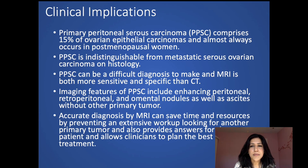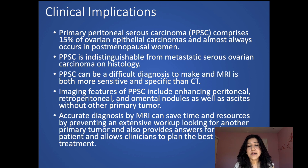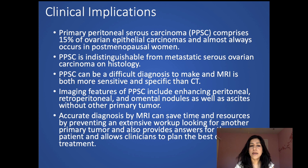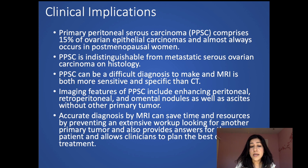In conclusion, primary peritoneal serous carcinoma accounts for 15% of ovarian epithelial carcinomas and almost always occurs in postmenopausal women. It is identical to metastatic serous ovarian carcinoma on histology and can be a difficult diagnosis to make. MRI is both more specific and sensitive than CT. Accurate diagnosis by MRI can save time and resources by preventing an extensive workup for another primary tumor, and allows the clinician to plan the best course of treatment. Thank you very much.